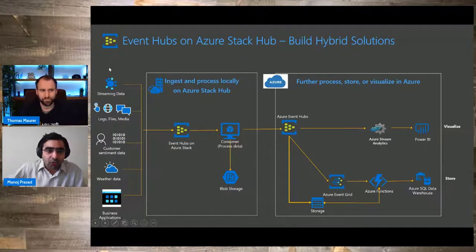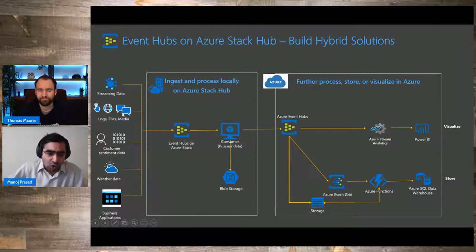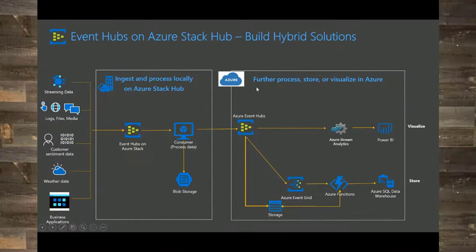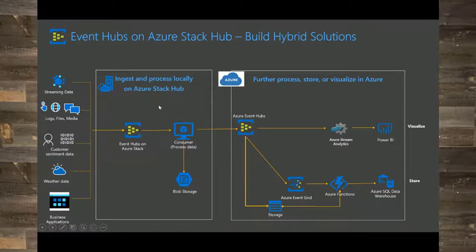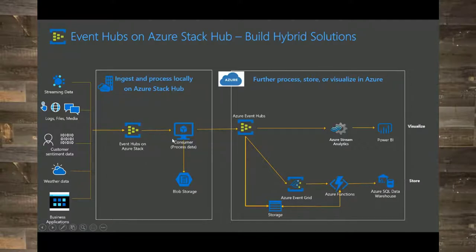Let's navigate from left to right. You have a multitude of data sources — different types of data, like streaming data, logs, weather data, or different business applications. The box here is the Stack Hub, and this box is the Azure Cloud. I'm not comfortable ingesting this data directly into the public cloud. Rather, I want to ingest it locally, do some processing, and then have the processed data go into the public cloud. All this data gets ingested through Event Hub on Azure Stack, and a consumer basically consumes these events and does some kind of processing.